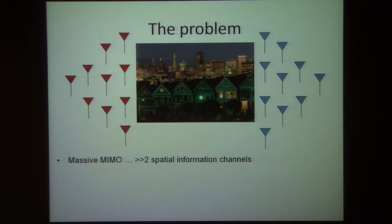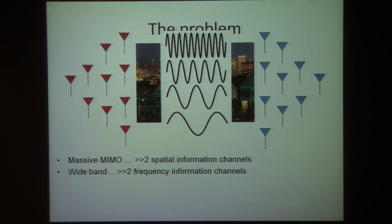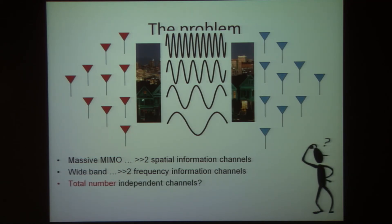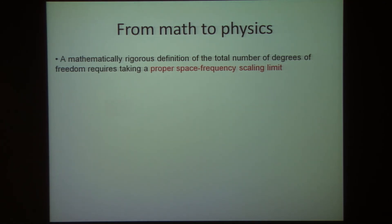There are a lot of open questions in Massimo's slides. The problem, in a nutshell, is the following: if you go from one antenna to two antennas, from theory we know we have two parallel channels — two degrees of freedom. Similarly, if I double the bandwidth, I can think of that as twice the capacity. The question he's trying to ask is: when does this scaling end? If I go to eight antennas, will that be eight times the capacity? If I increase the frequency eight times, will all this scale both in space and frequency? What is the total number of independent channels? At what point does this simple scaling break down? His group is trying to answer, in a mathematically rigorous way, what the total number of degrees of freedom is required to properly characterize the space-frequency scaling limit.